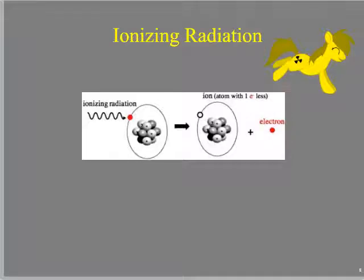Ionizing radiation means anything that can interact with an atom and create an ion. We have a photon interacting with an atom, and as a result we have an ion pair: an atom with a net positive charge because it lost an electron, and an electron with a net negative charge. We'll call that an ion pair.